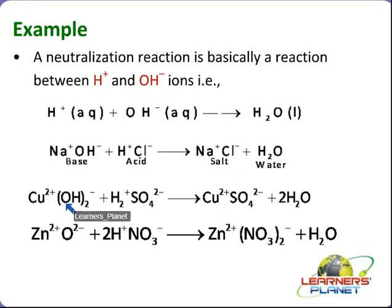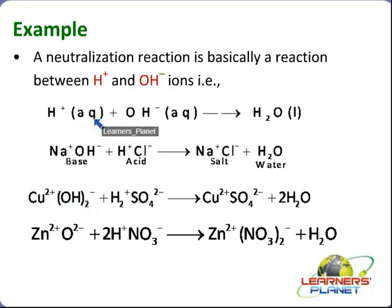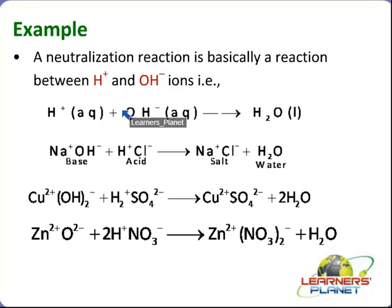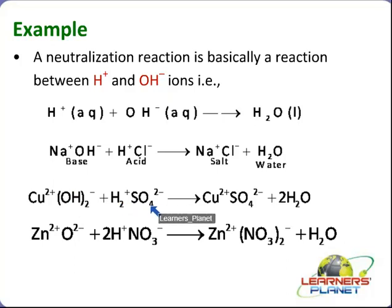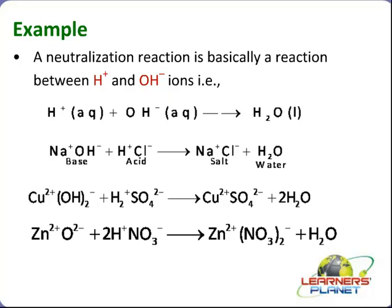Another example: an acid is a substance which furnishes H⁺ ions in solution, and a base is a substance which gives out OH⁻ ions in solution. So here — Cu(OH)2 gives OH⁻ ions in solution, and H2SO4 gives H⁺ ions in solution. Now let's see how they dissociate.